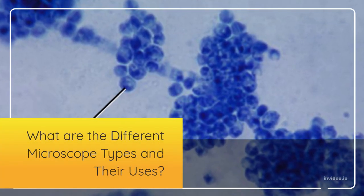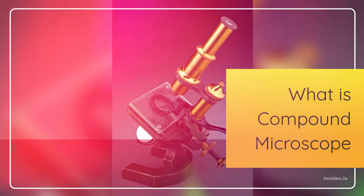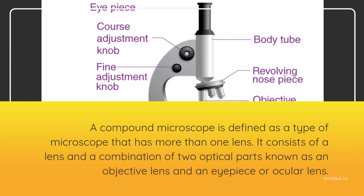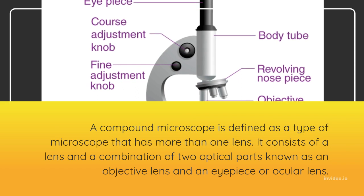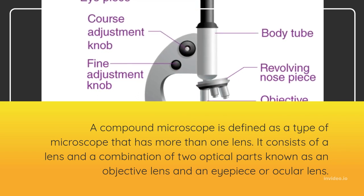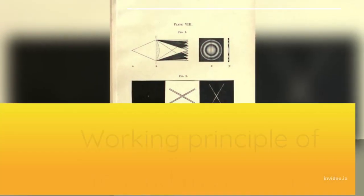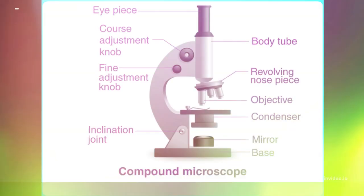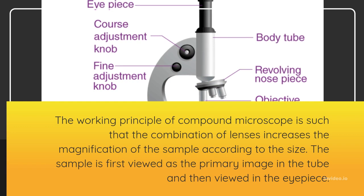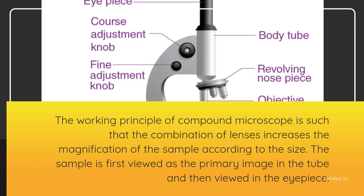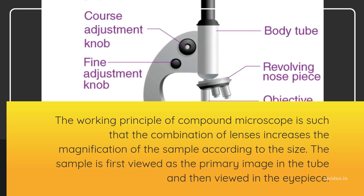What are the different microscope types and their uses? What is Compound Microscope? A compound microscope is defined as a type of microscope that has more than one lens. It consists of a lens and a combination of two optical parts known as an objective lens and an eyepiece or ocular lens. The working principle of a compound microscope is such that the combination of lenses increases the magnification of the sample according to the size. The sample is first viewed as the primary image in the tube and then viewed in the eyepiece.